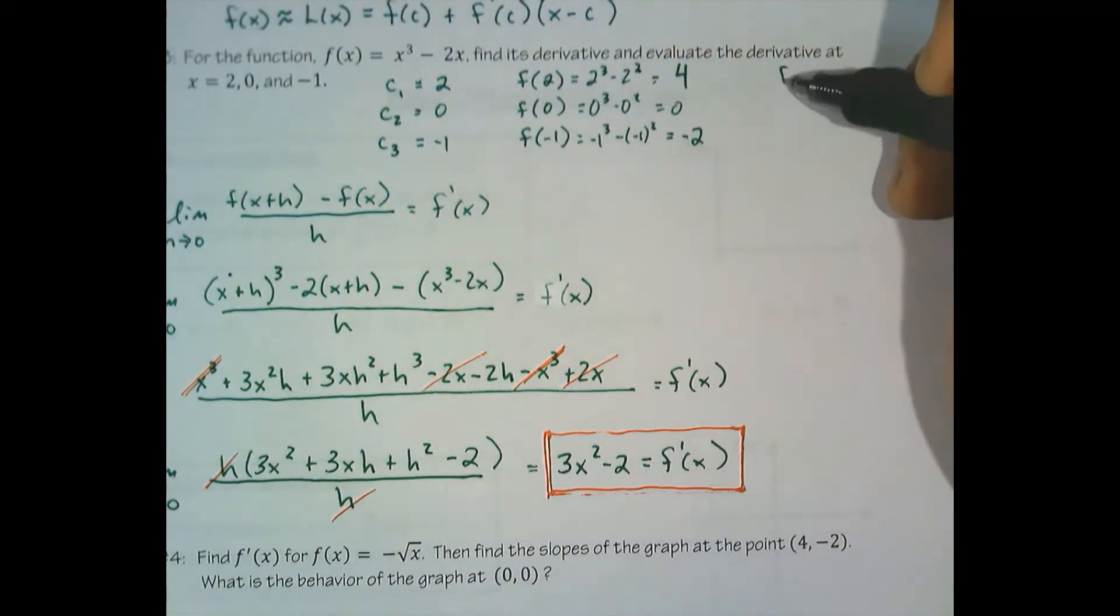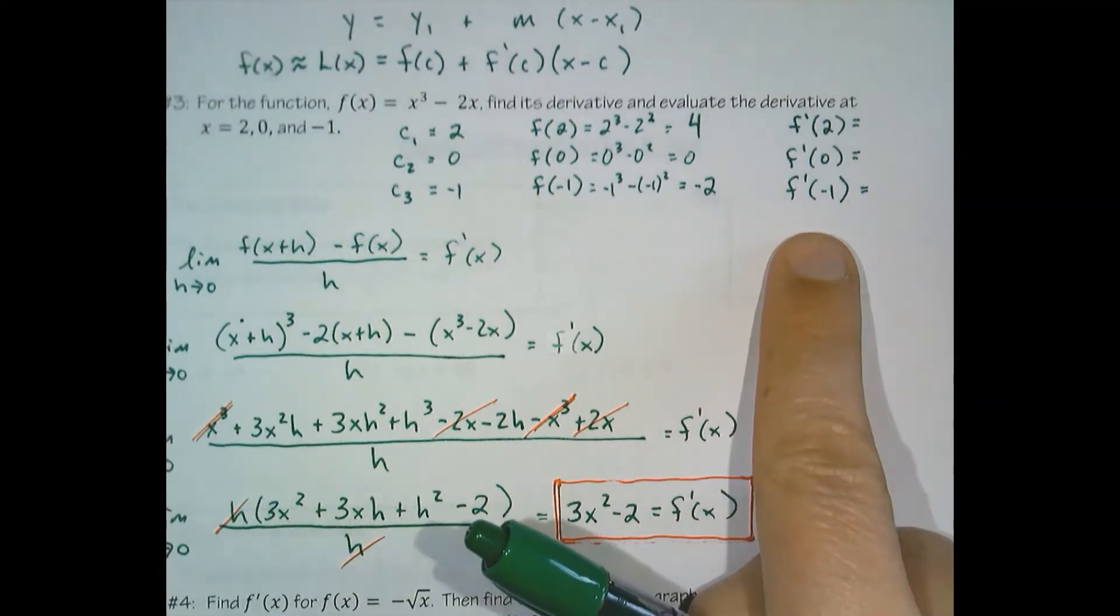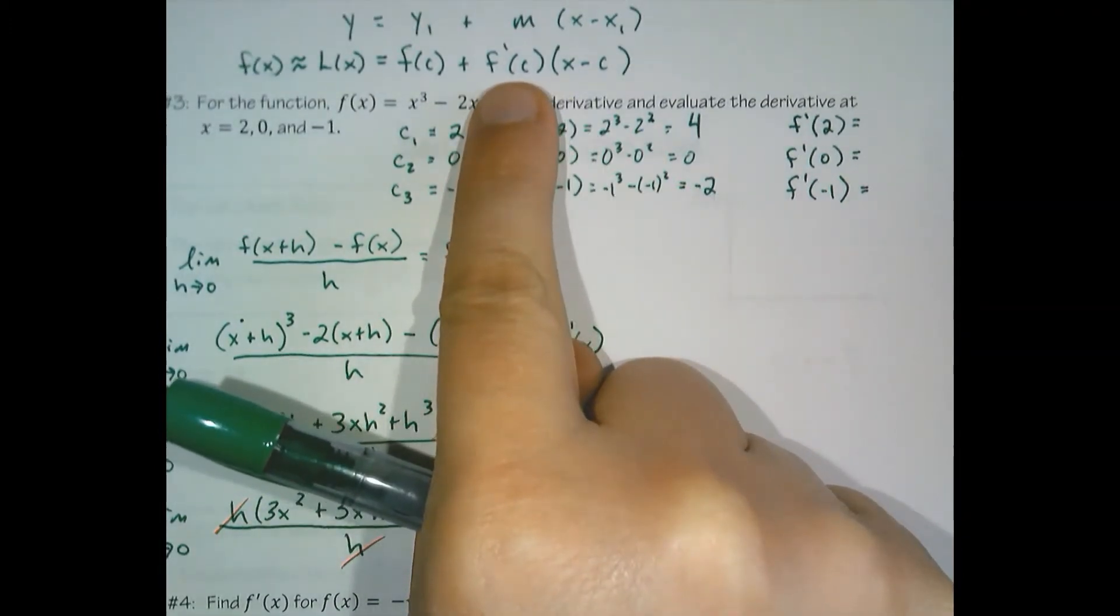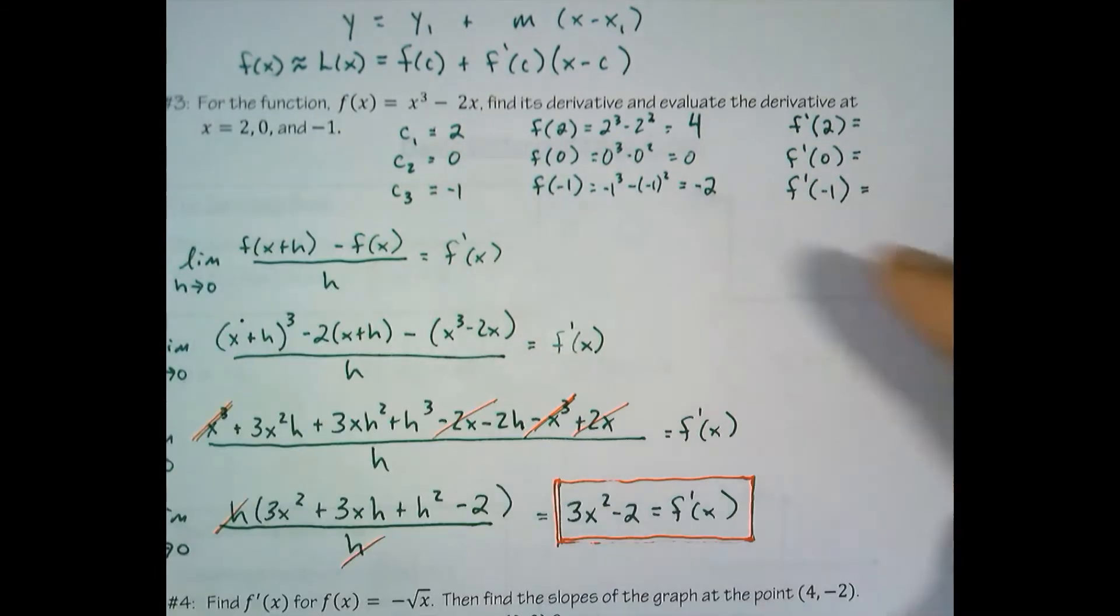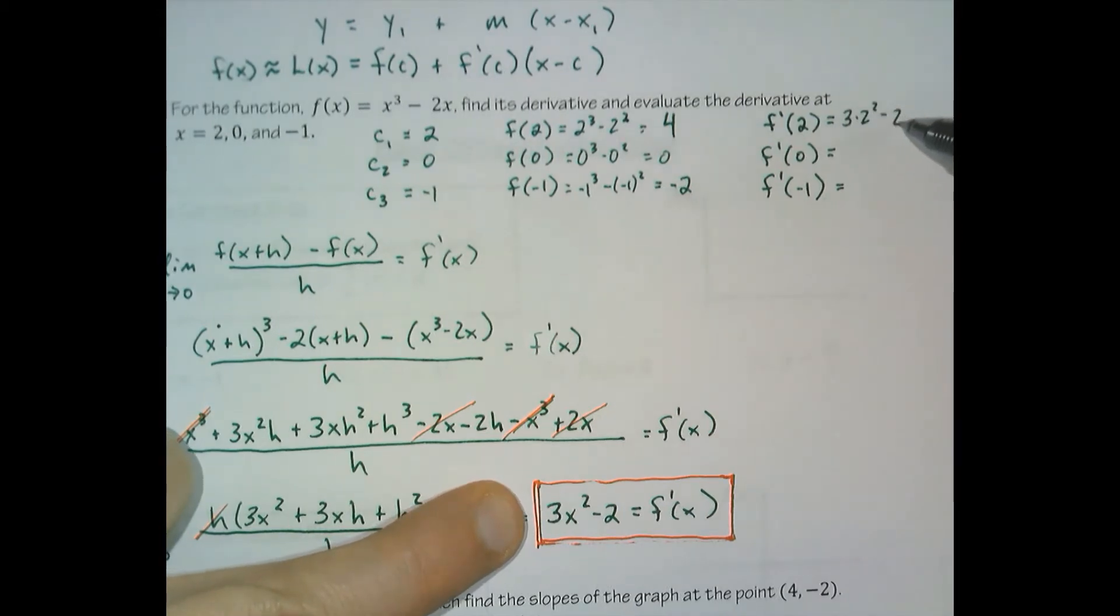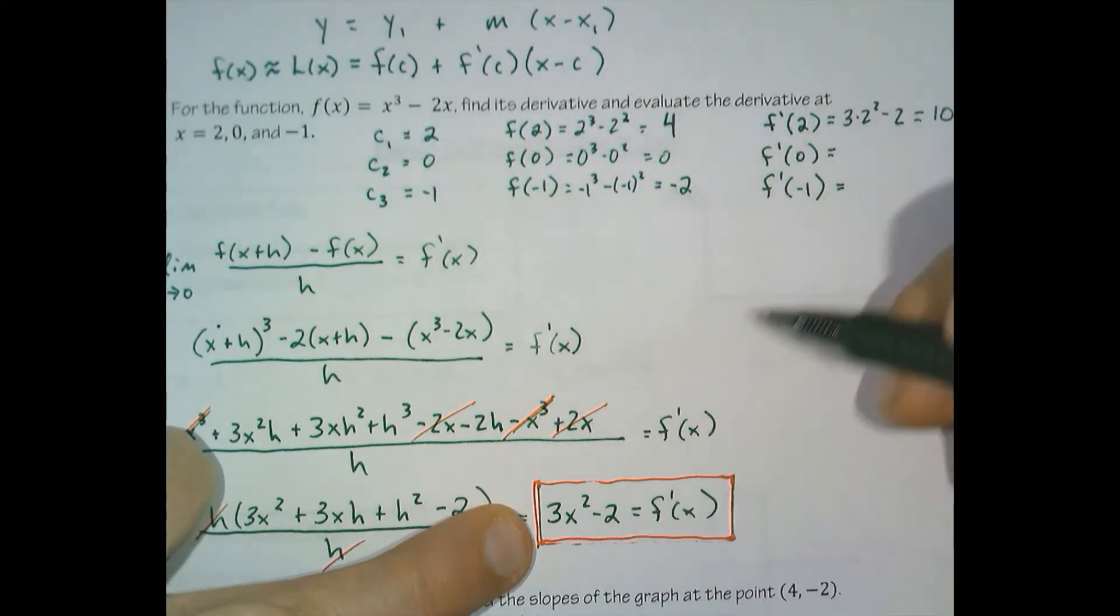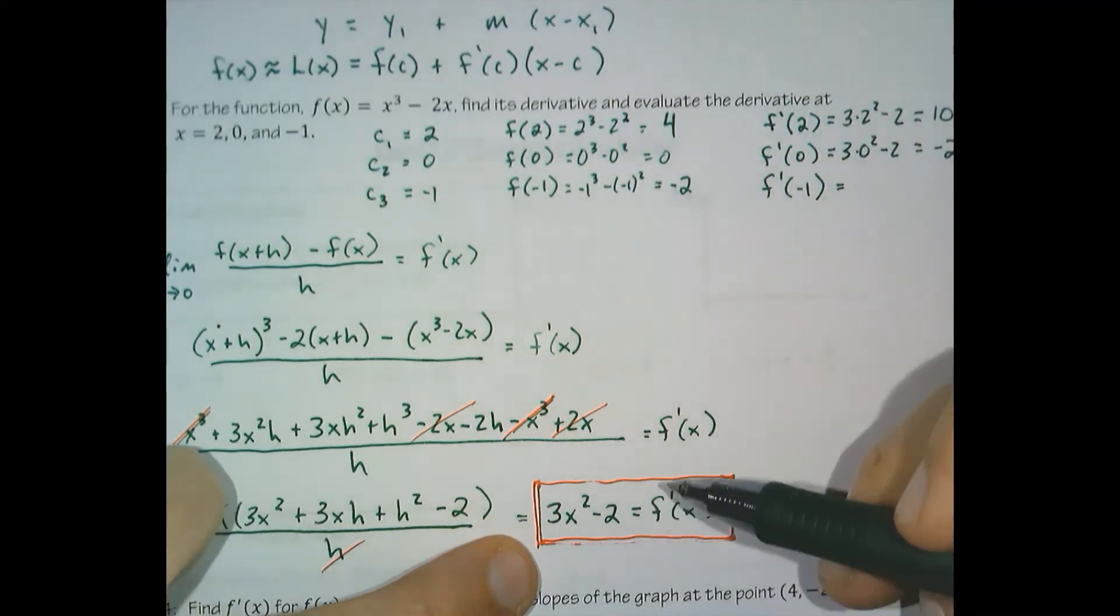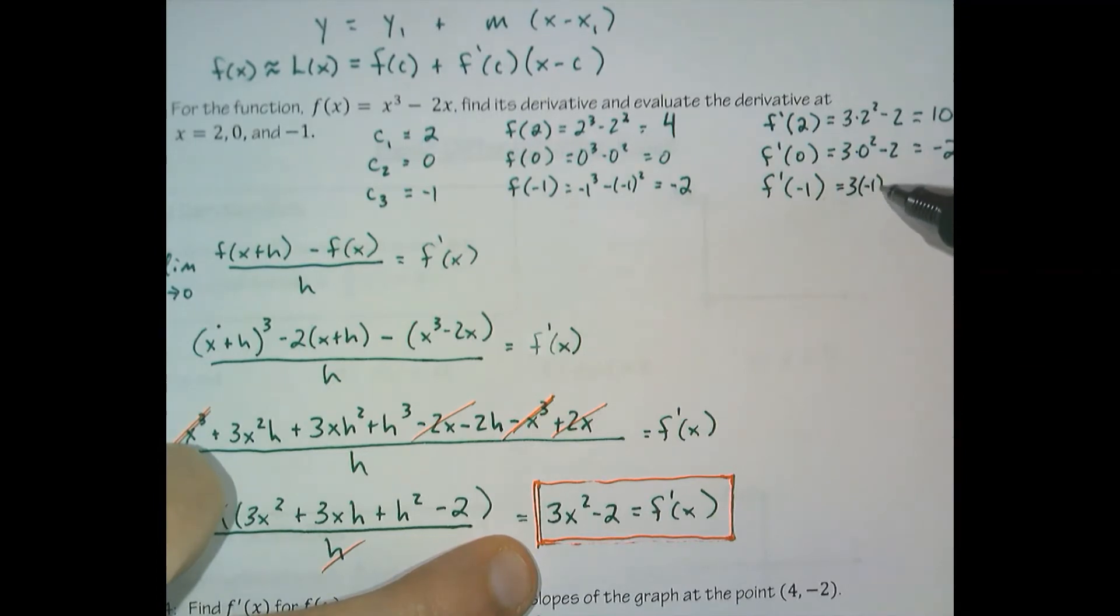Once we know our derivative, we can evaluate the derivative at our three centers. So f prime of two is three times two squared minus two, which equals 10. F prime of zero would be three times zero squared minus two, which is negative two. And f prime of negative one is three times negative one squared minus two, which is one.